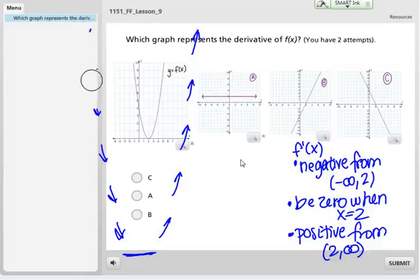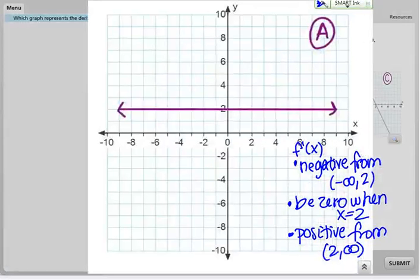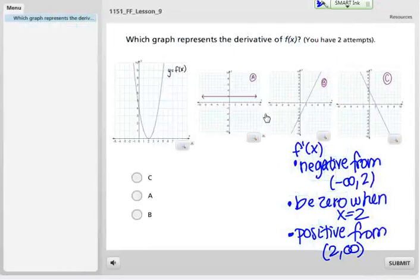Let's see if any of our graphs match those characteristics. What about choice A? Choice A is just a horizontal line. It's constant at the line y equals 2. That doesn't meet any of my criteria. I know that my answer is not choice A.